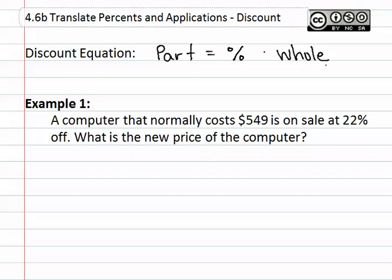Because a part is defined as some percent of a whole. In this case, the part is going to be our discount, the percent will be our rate or the percent of discount, and the whole will be our original price.